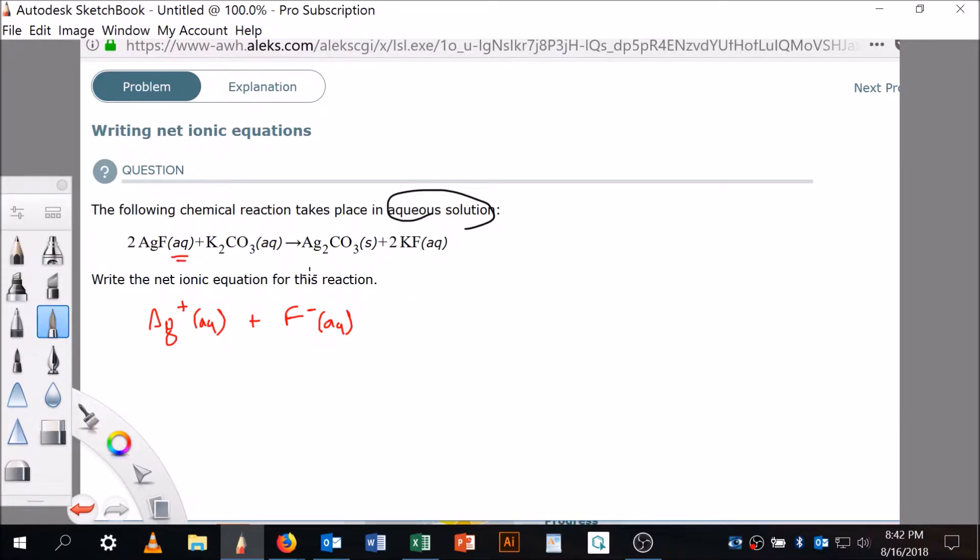Now, this is also aqueous. So that means we have potassium which is aqueous, and potassium is a plus one because it's in column one. And we have carbonate which is minus two because I've memorized it.